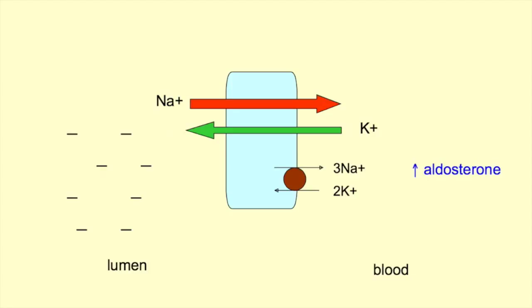Aldosterone has several effects. It increases the activity of epithelial sodium channels, increases the number of potassium channels that allow secretion into the lumen, and increases the activity of basolateral sodium-potassium ATPase, which puts potassium inside the cells, making it available for secretion into the lumen.